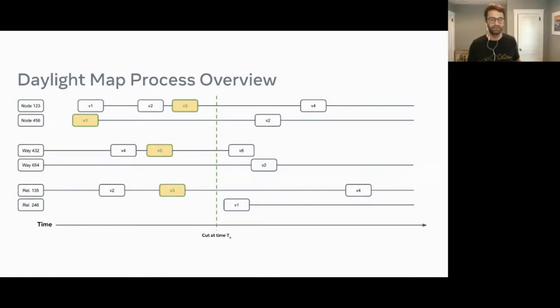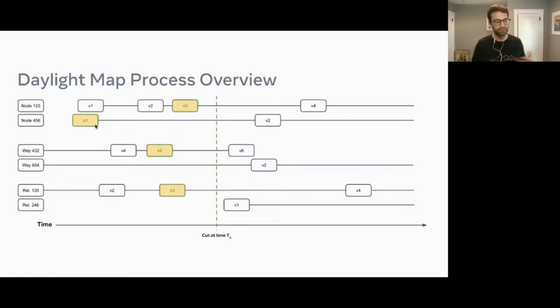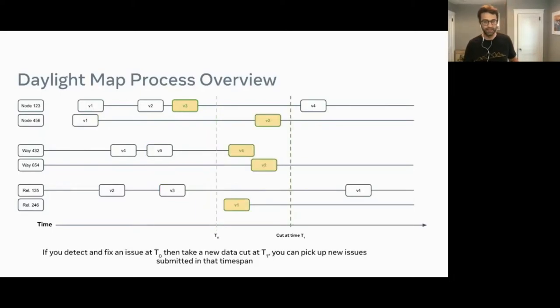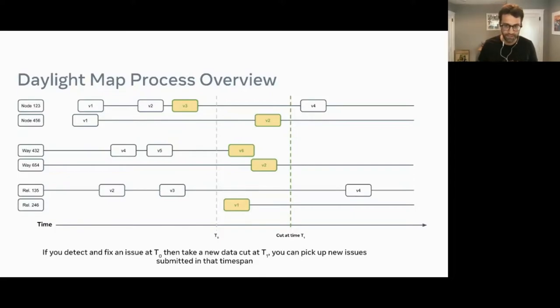On the second node at version one, maybe there's a problem — the name is wrong, it's a bad node, there's some weird mistake. So you submit a fix and now have version two, and you take a new time cut at time T1. What's great is you now have your fix in there.